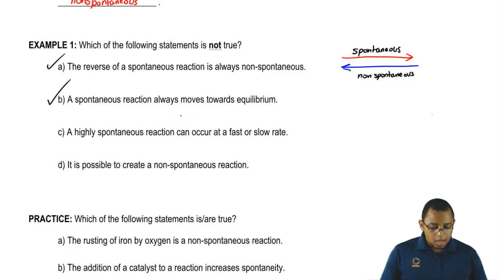Next, a highly spontaneous reaction can occur at a fast or a slow rate. Like we said before, spontaneity has nothing to do with kinetics. A spontaneous reaction could take a minute to happen or it could take a million years to happen. The fact that it can happen makes it a spontaneous reaction. Spontaneous reactions occur.